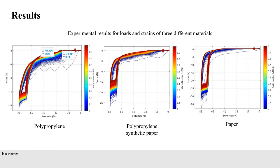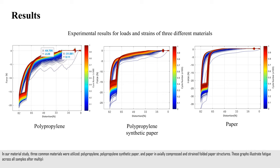In our material study, three common materials were utilized: polypropylene, polypropylene synthetic paper, and paper in axially compressed and strained folded paper structures.